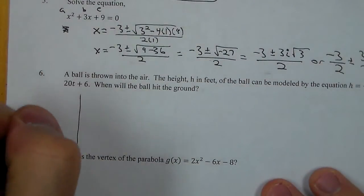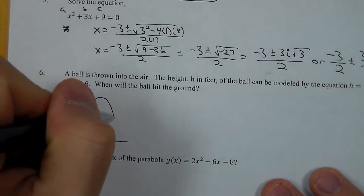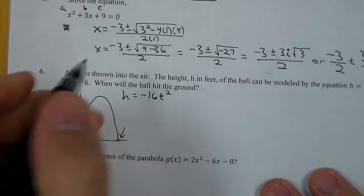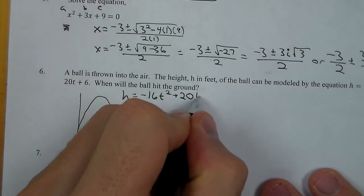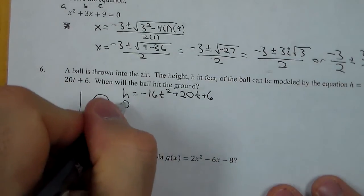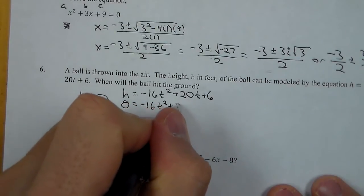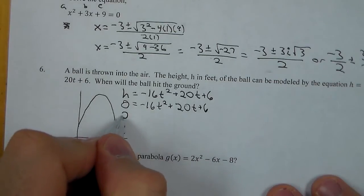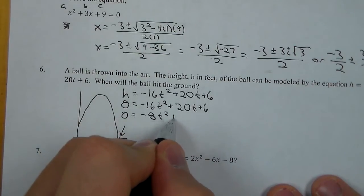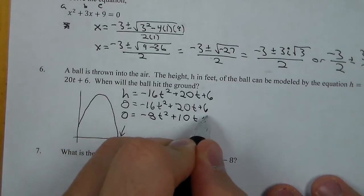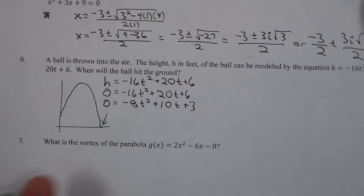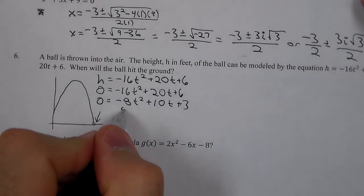For number 6, we have a ball thrown into the air that comes back down. We need to figure out when it hits the ground. Our function is negative 16t squared plus 20t plus 6. We set that equal to 0. I can divide out a 2 first to make things a little bit smaller: that's negative 8t squared plus 10t plus 3. Now we can factor it or use the quadratic formula. Completing the square probably would not be a good choice here. Let's use the quadratic formula — it's a good, consistent backup.